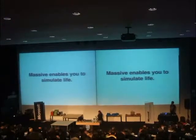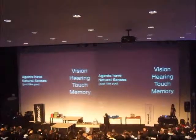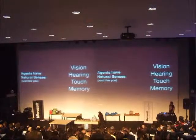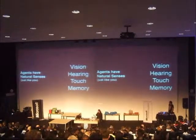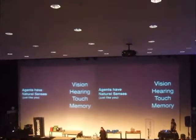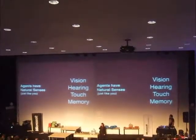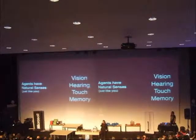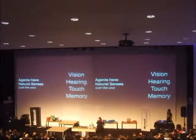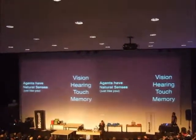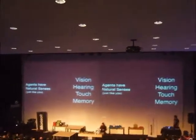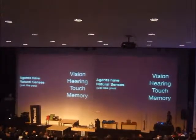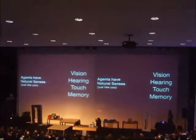So agents — AI. Remember Agent Smith from The Matrix? An agent is an AI entity, and agents in Massive use natural senses just like us to navigate around their environment. They have vision, hearing, touch, and memory.